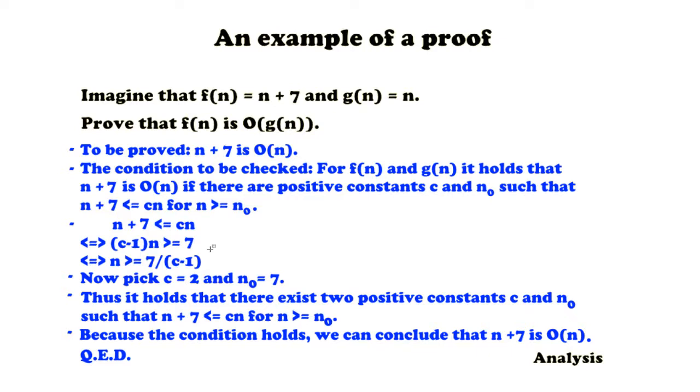And from this we can directly pick a c and an n₀. So let's for example take c is 2 and n₀ is 7. These are just two very simple examples. And it directly shows us that there are two positive constants c and n₀ such that n plus 7 is smaller or equal to cn for n is greater or equal to n₀, because these constants are of course positive.